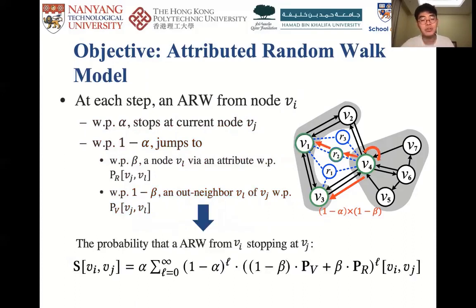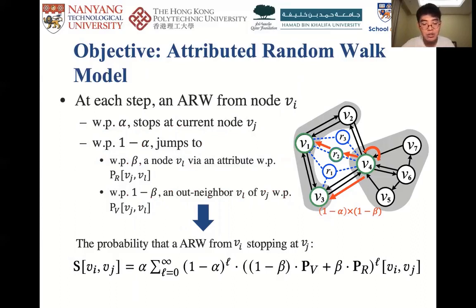After doing some math, the probability of an ARW from V_i to V_j can be computed as S(V_i, V_j) by this equation. We see that the ARW well combines multi-hop topological proximities between nodes with multi-hop attribute similarities between nodes. Obviously, it is costly to compute S, which requires quadratic time and space.